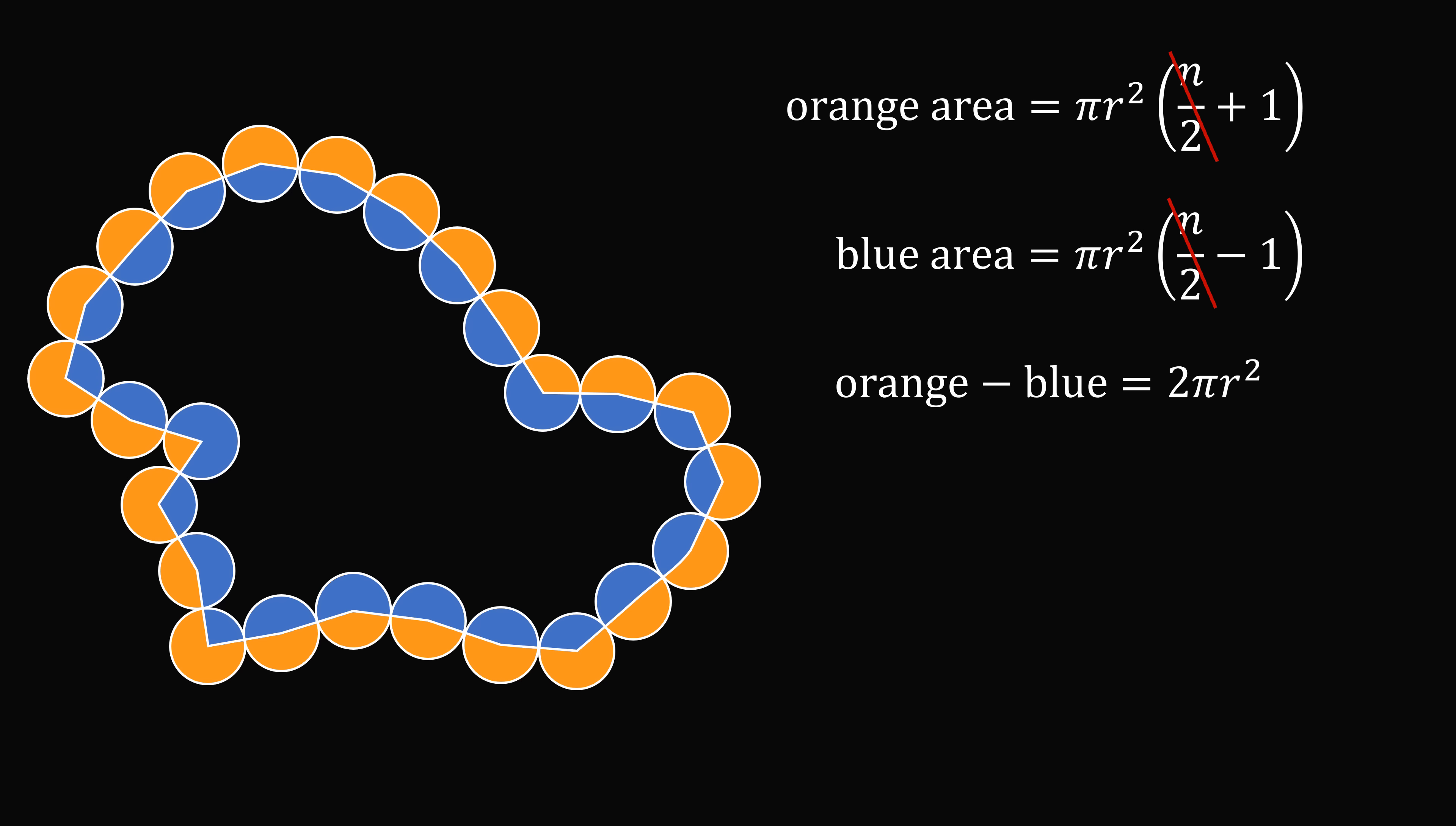So the difference of the orange and blue areas is 2 pi r squared. And amazingly, the difference is always the area of two circles, and this does not depend on the number of circles. It's an incredible puzzle and a very unexpected answer. Wow.